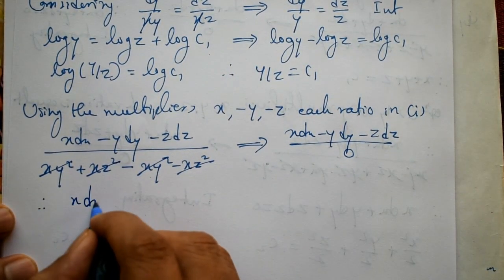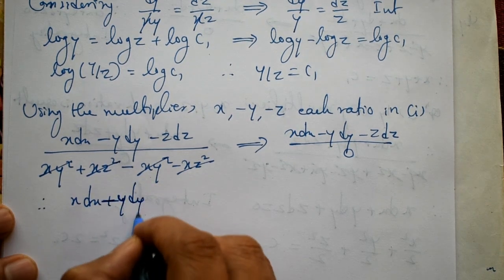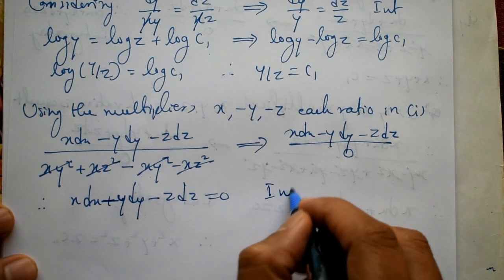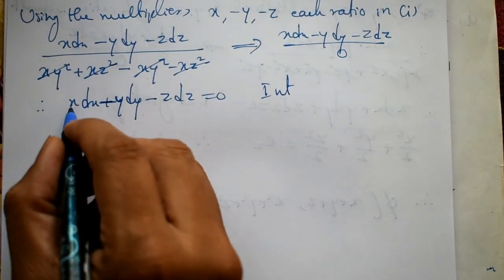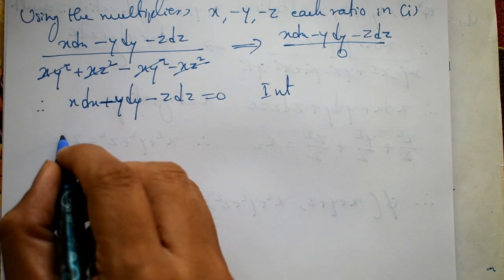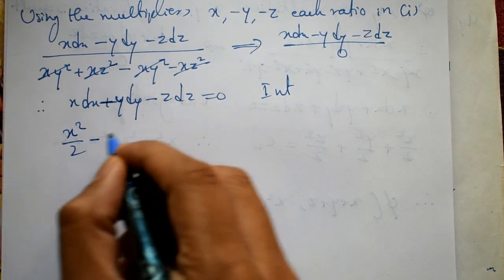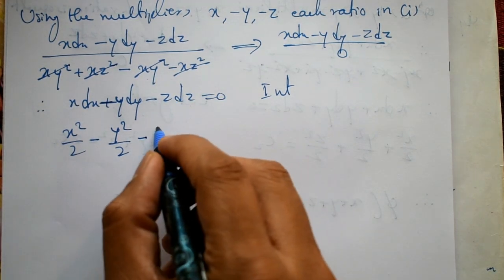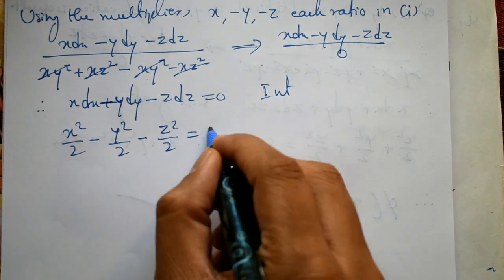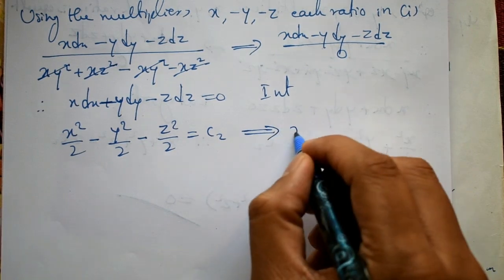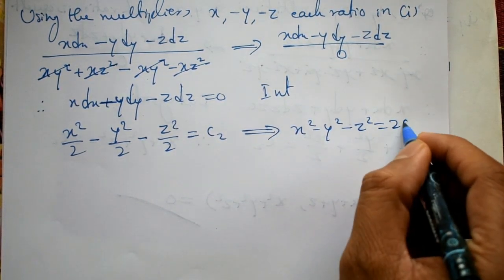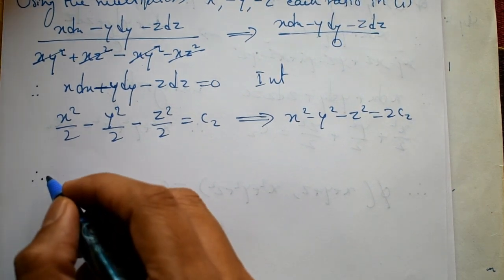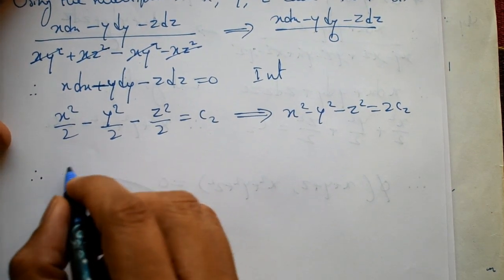Since the denominator equals zero, we have: x·dx − y·dy − z·dz = 0. Integrating both sides: x²/2 − y²/2 − z²/2 = constant, which gives x² − y² − z² = c2. This is the second solution.